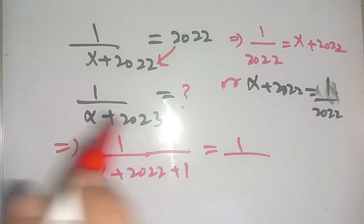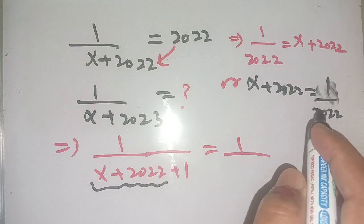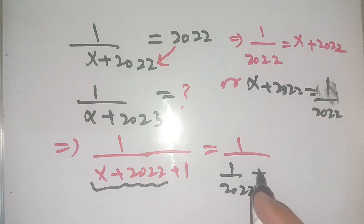This is equal to 1 divided by, now x plus 2022 it is equal to 1 divided by 2022, we place 1 divided by 2022 plus 1.